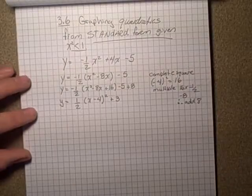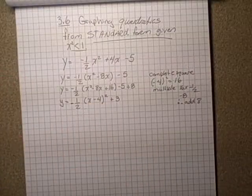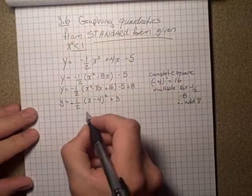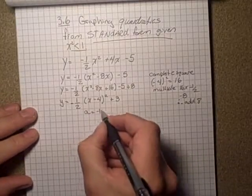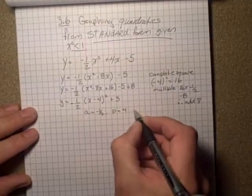Oops, forgot the negative sign here, very important. Don't forget that. So now we can see our points: a is equal to negative one half, p is equal to 4, and q is equal to 3.